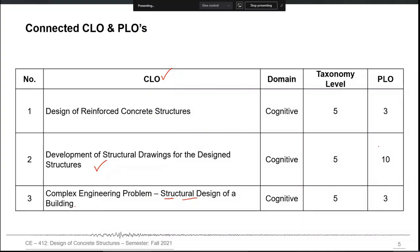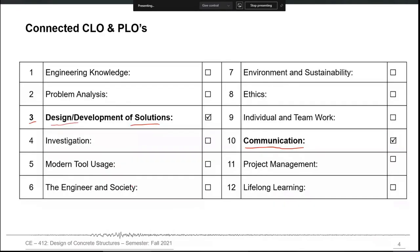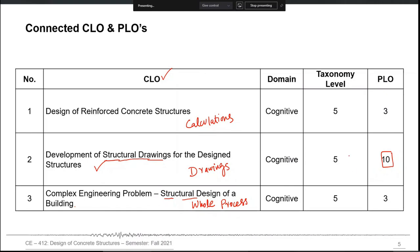The second CLO is mapped to PLO Number 10, which is Communications, because once you design a structure and perform all those calculations, you have to convert those calculations into structural drawings to convey your design to a site engineer. CLO numbers 1 and 3 are mapped to PLO 3, which is Design and Development of Solutions, and the second CLO is mapped to PLO Number 10, which is Communications.